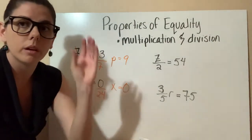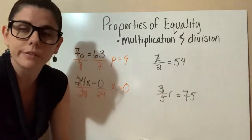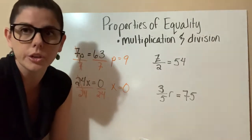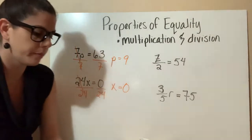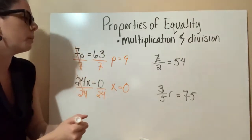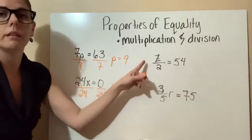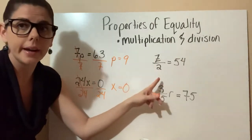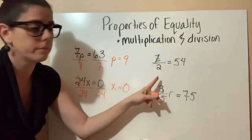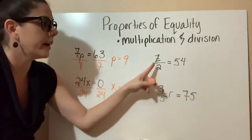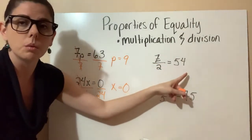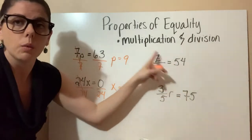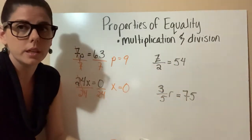Hopefully I can simplify it and make it easier to understand. When we look at this one, we have z divided by 2 equals 54, and we want to know what z equals.